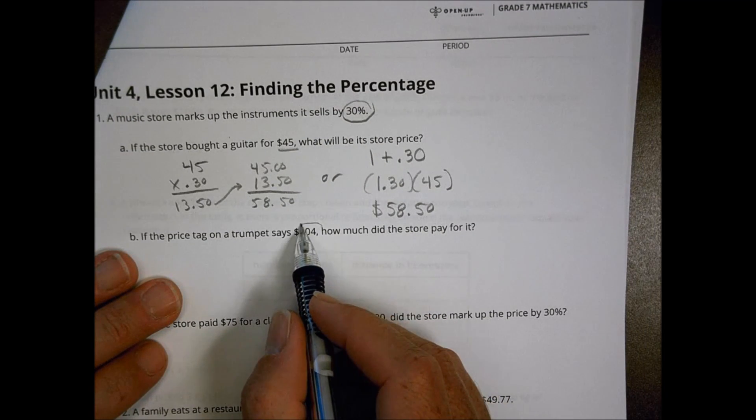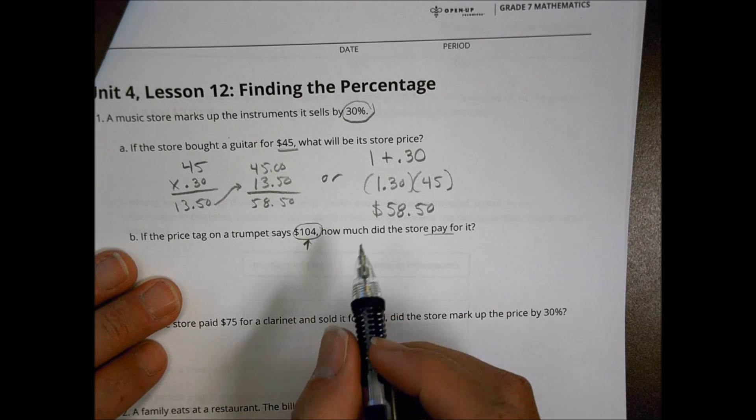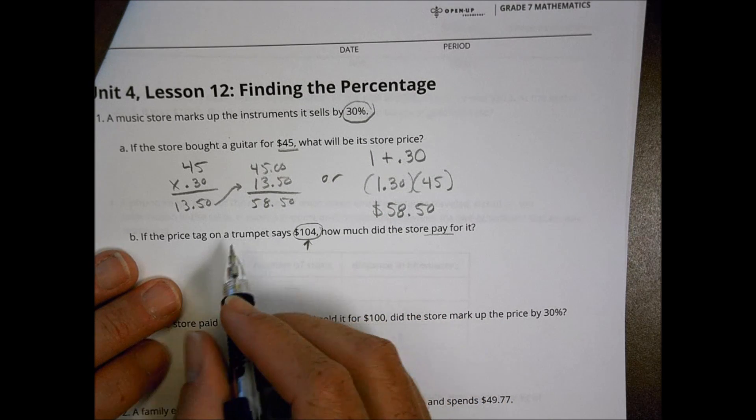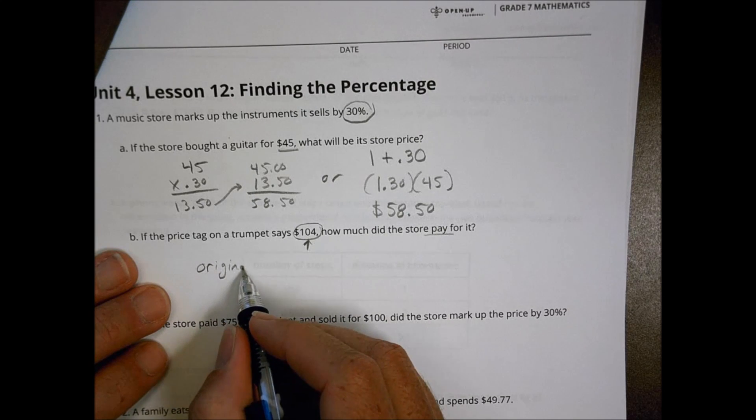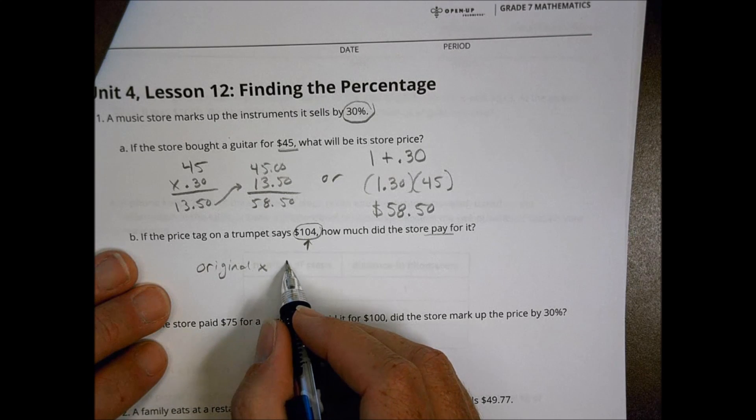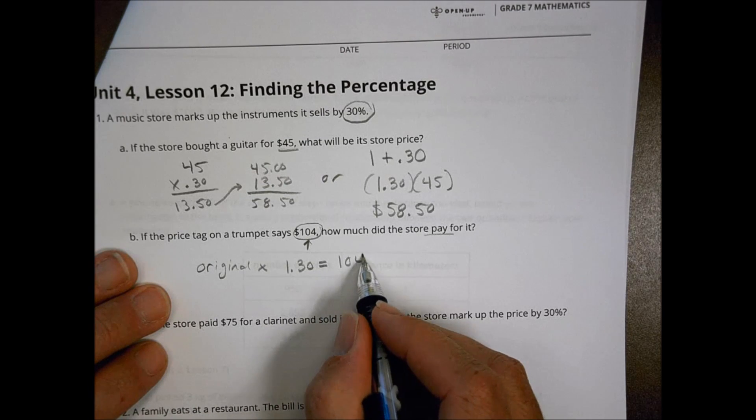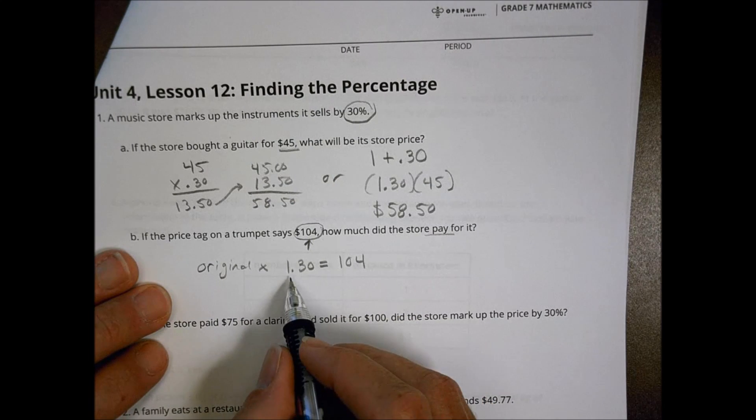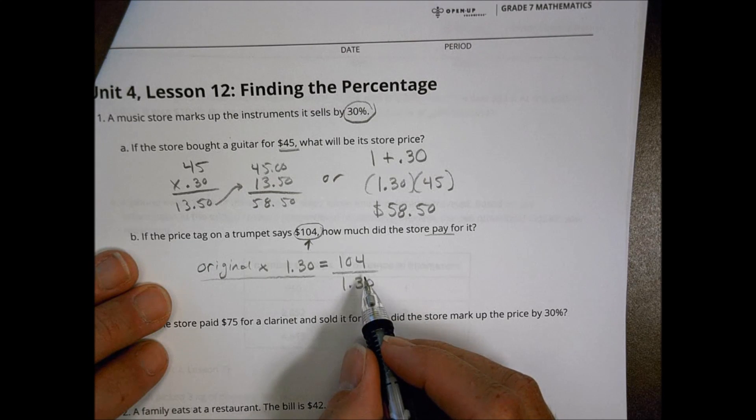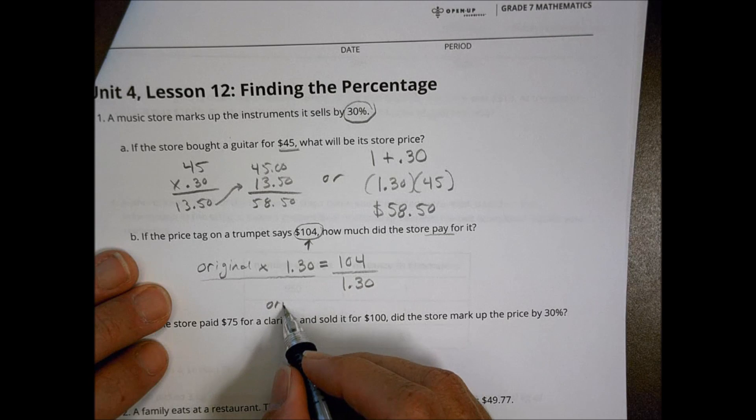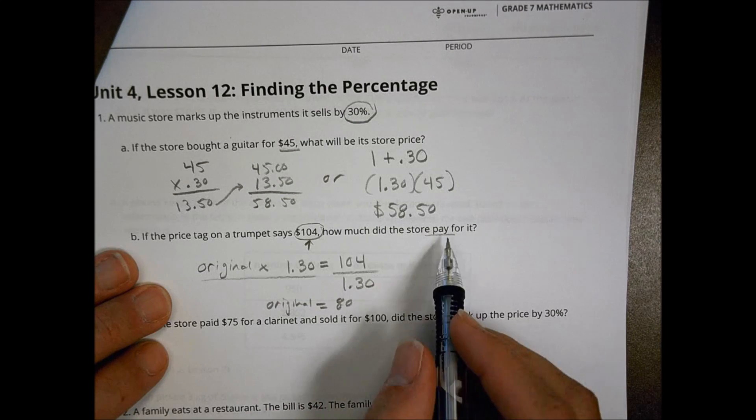The price tag on the trumpet says $104. How much did the store pay for that? So that's already included in the markup. We know that they mark up things by 30%. So think of it this way. If you have the original price, and you multiply that by 1.30, which is what we know we're multiplying by, that gives you the amount they're selling it for, which in our case was $104. So to find the original price, I would actually divide both sides by 1.3 or 1.30. And 104 divided by 1.30 tells me that my original price, or what the store paid for, I should say, is going to be $80. And that's how much the store paid for it was $80.